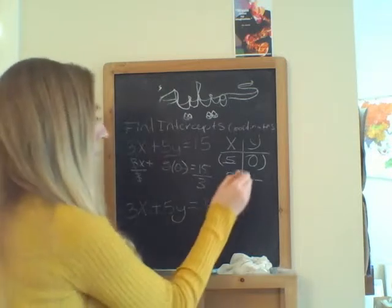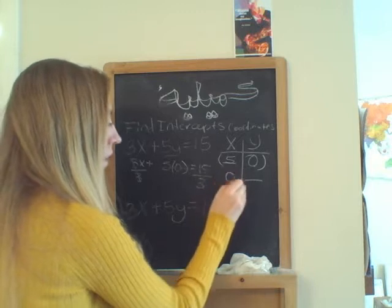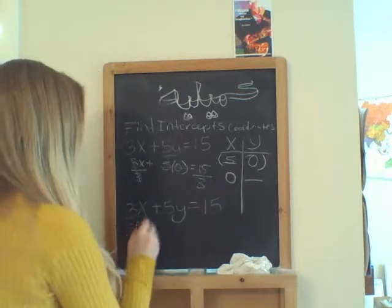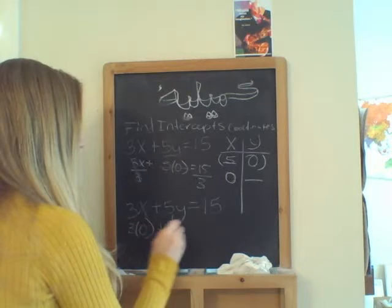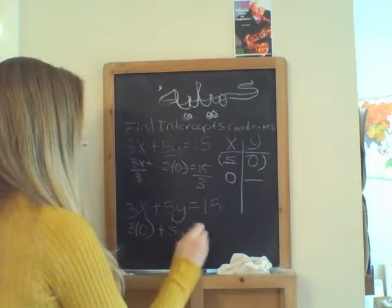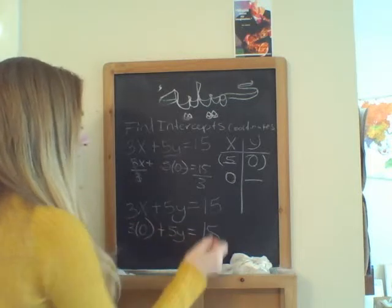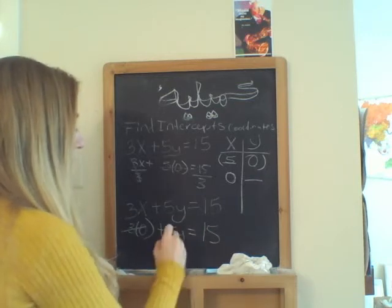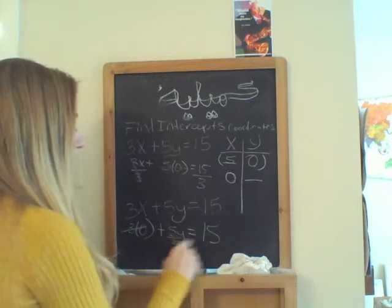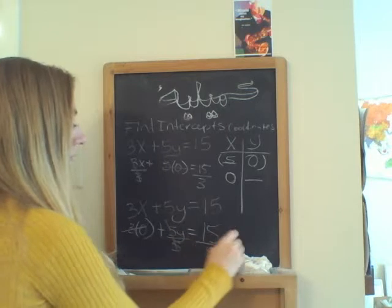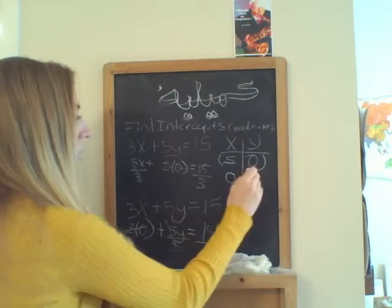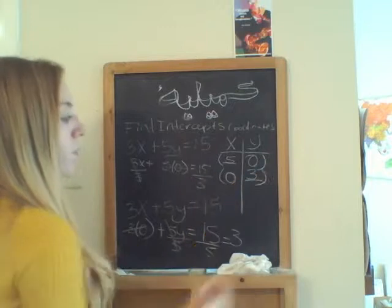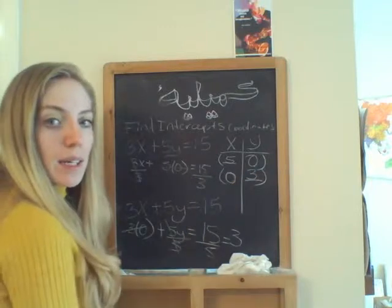And then here, I come and solve for my y-intercept. I go ahead and plug in 3 times 0 plus 5y equals 15. I know this here will cancel out, and then I have 5y equals 15. Divide by 5, which gives 3, so I've got my coordinate here.